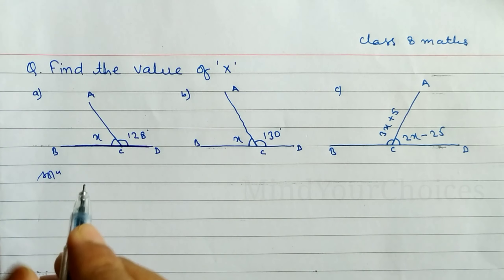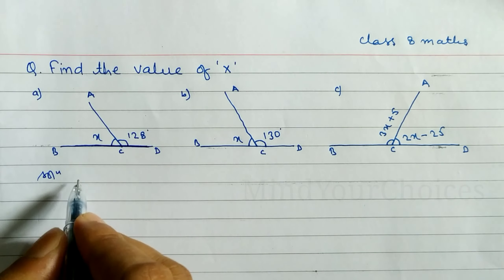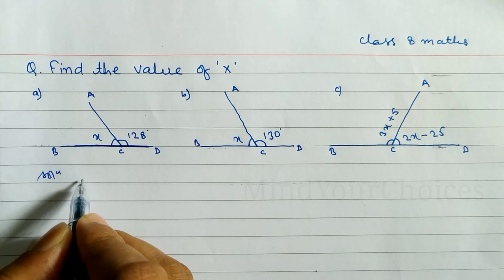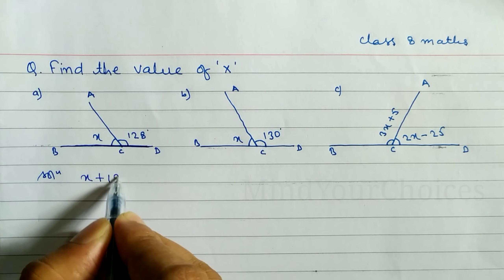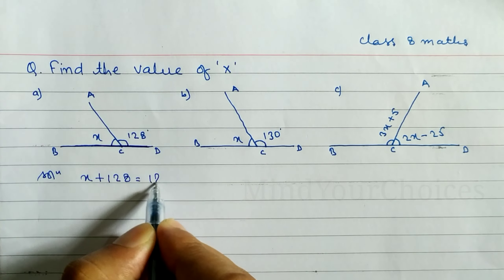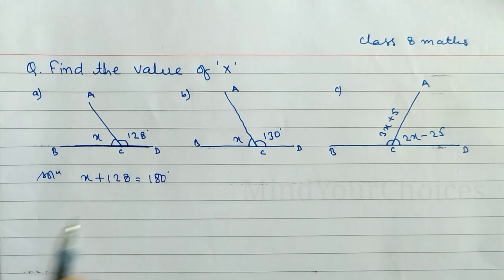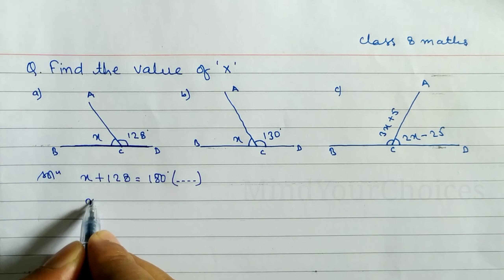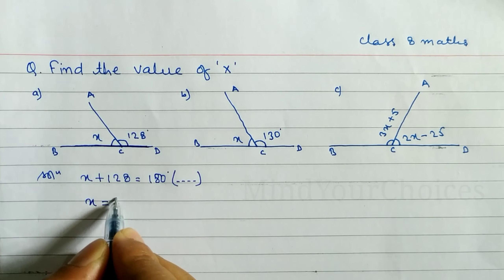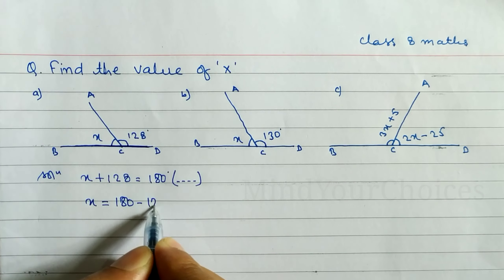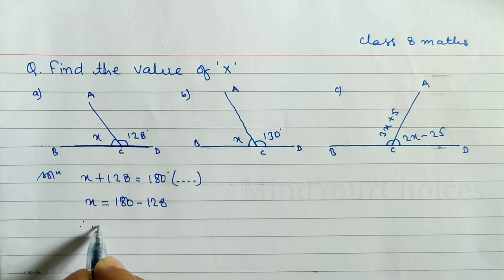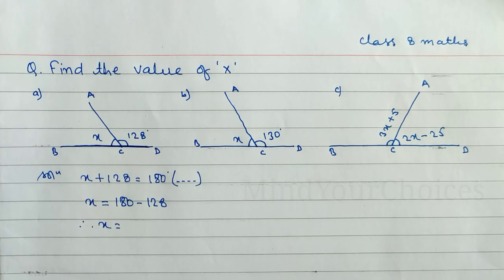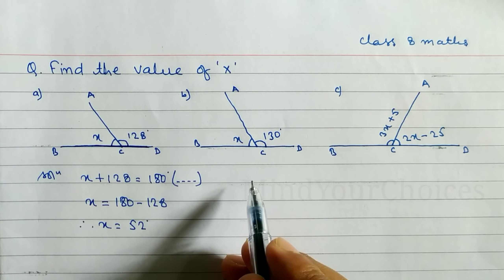The reason we can write is that they are supplementary angles. So we can write x plus 128 is equal to 180 degrees. Therefore x is equal to 180 minus 128, and when you subtract this we get the value of x, which is 52.